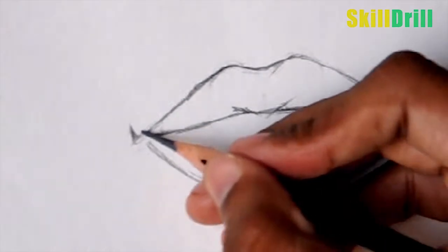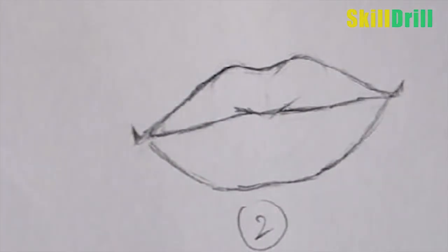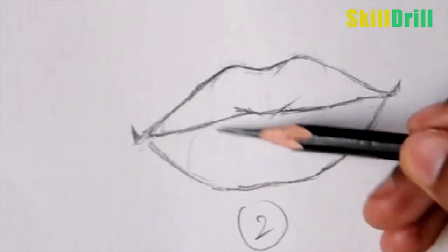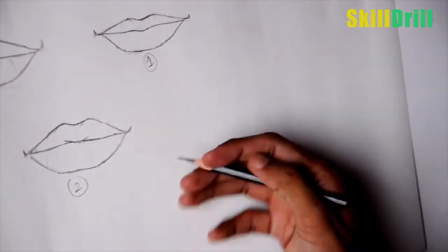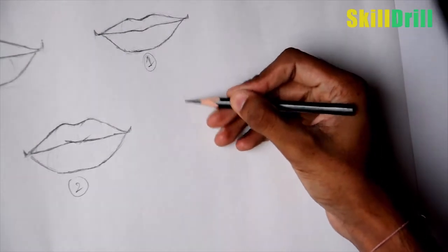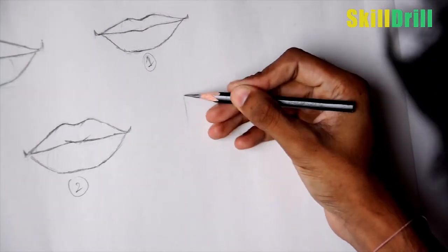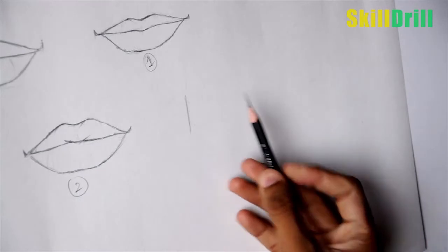This is the second technique. Now, from the side angle we have technique three. Start with a straight line, then a triangle.